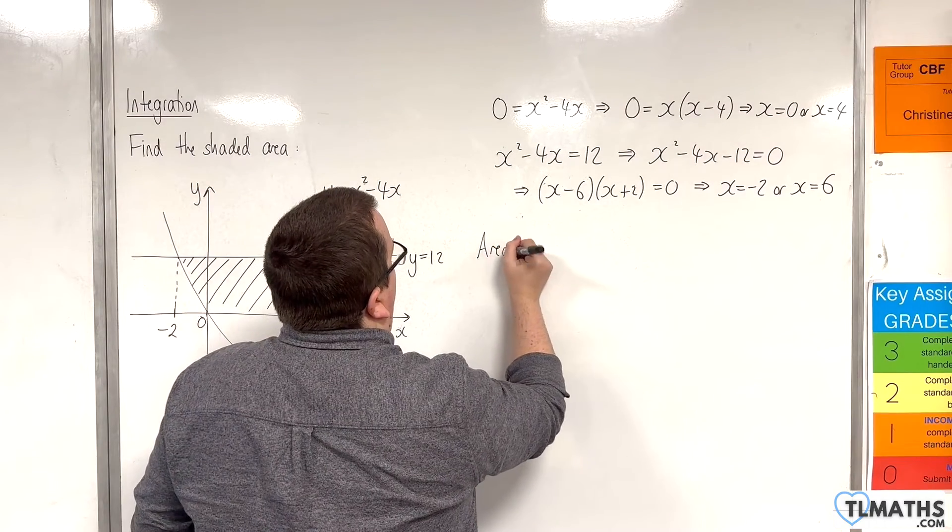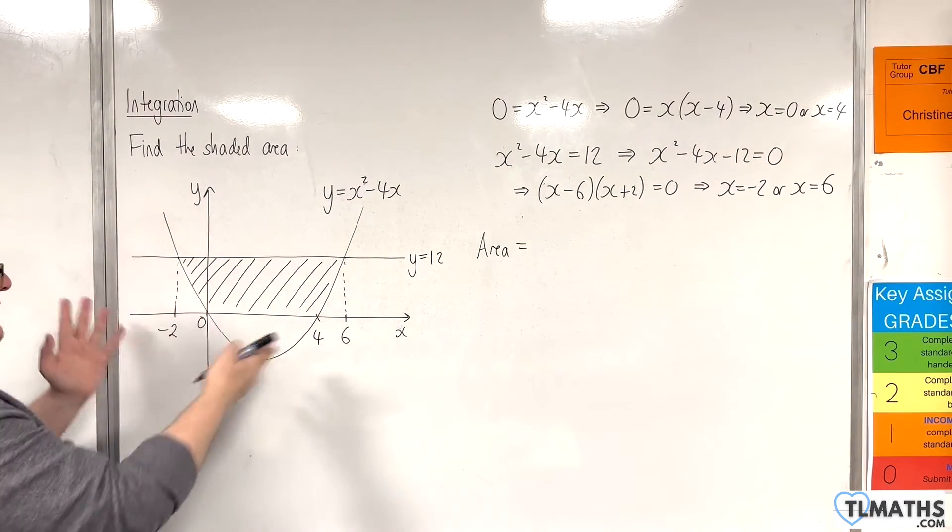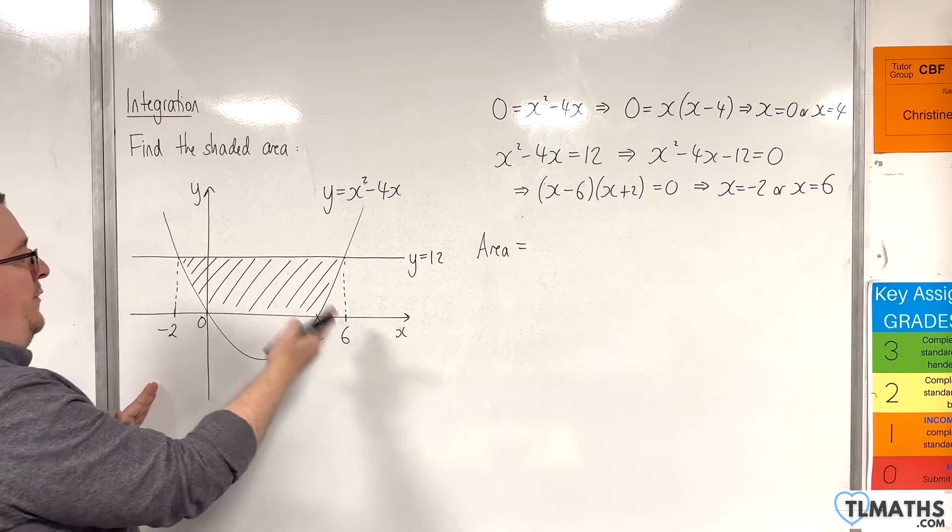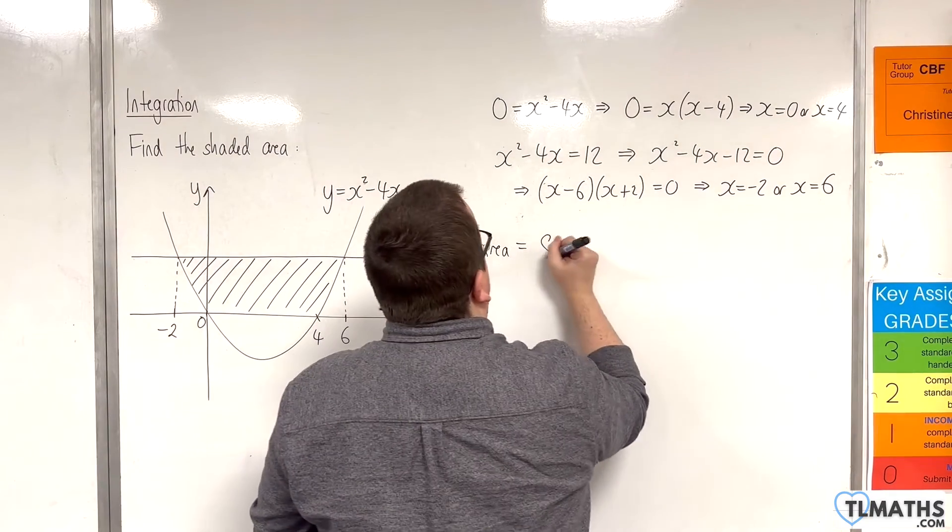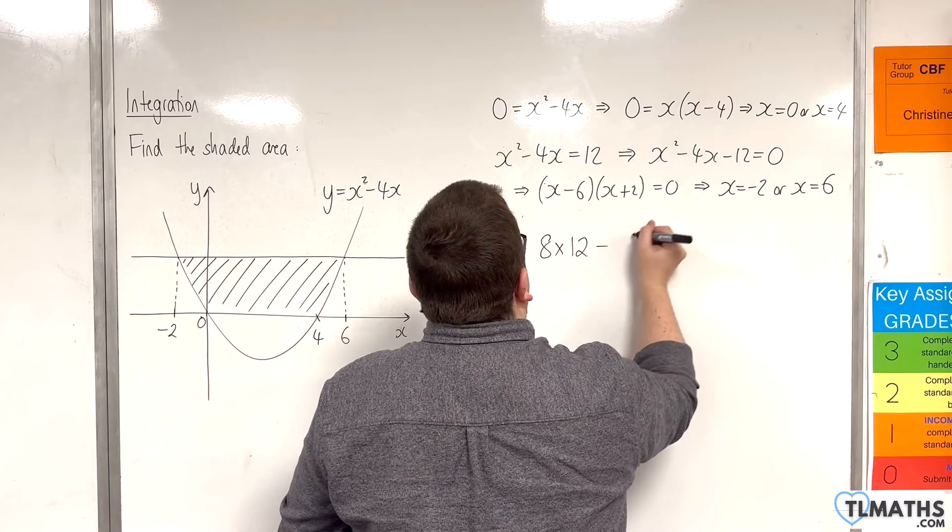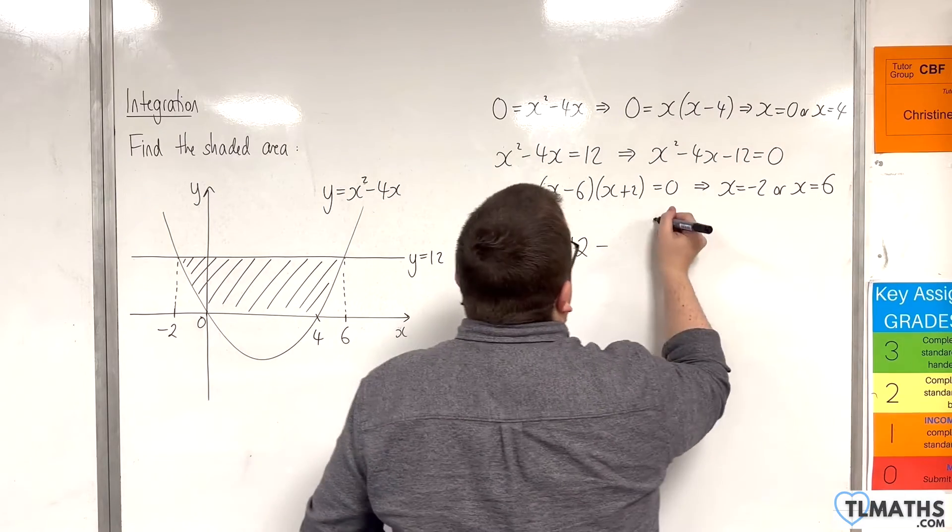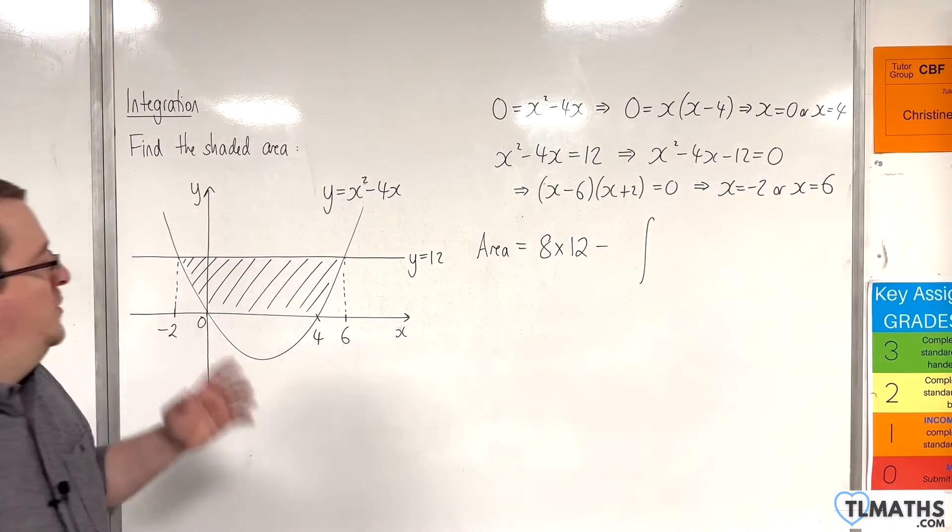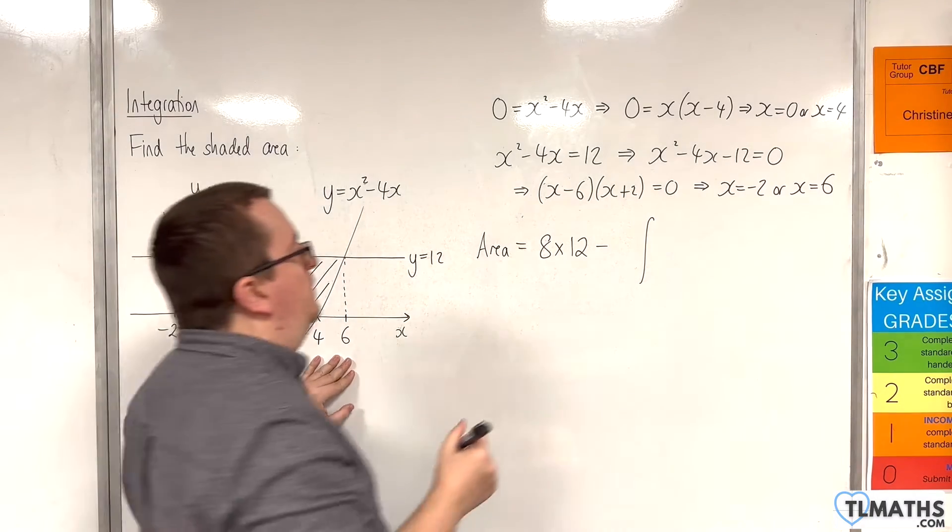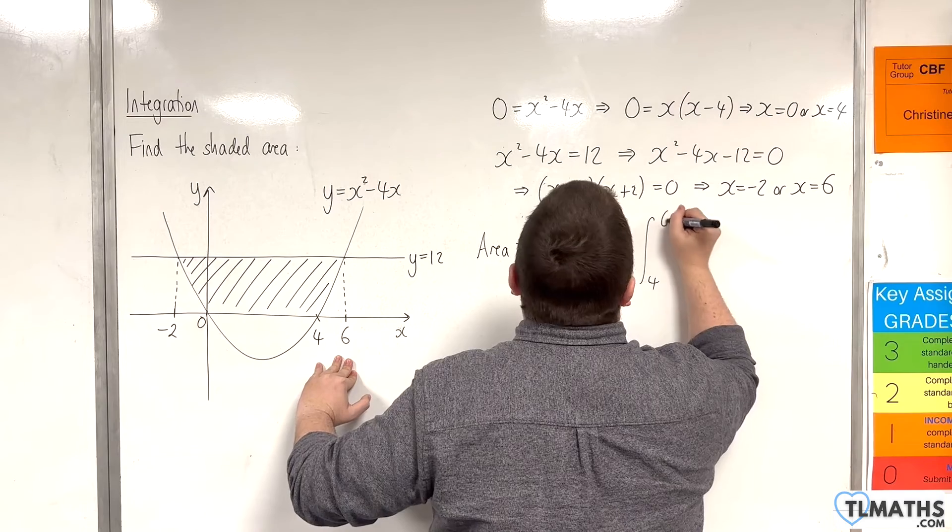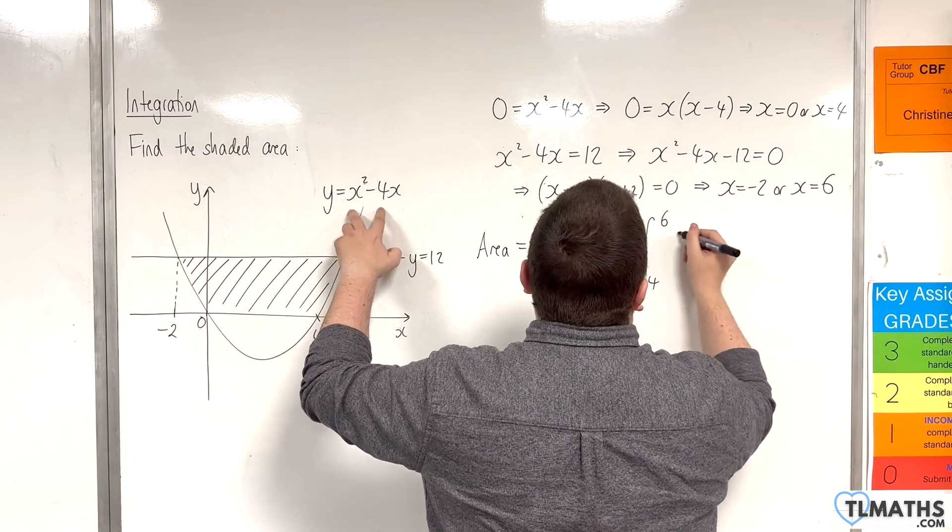So the area will be the area of the rectangle, which is from minus 2 up to 6, so that's 8 times by 12. And then I need to take away the area between the curve and the x-axis. So I'll go with these values here, 4 and 6. So from 4 to 6 of the x squared take away 4x.